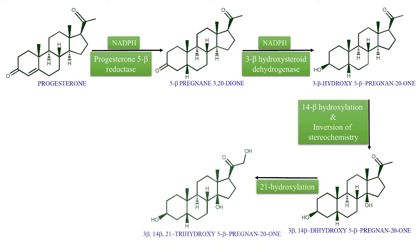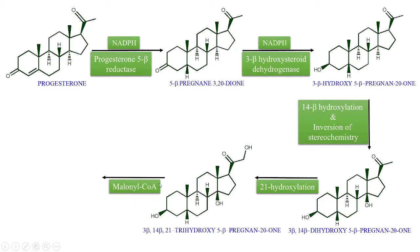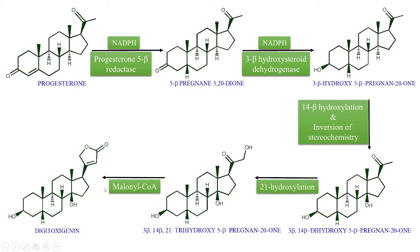Next, in the presence of malonyl coenzyme A, a new compound is formed where malonyl coenzyme A is incorporated. The name of this new compound is digitoxigenin. In this incorporation, there is a formation of a lactone moiety — specifically an alpha,beta-unsaturated five-membered lactone with a carbonyl carbon, carbon alpha, and carbon beta.